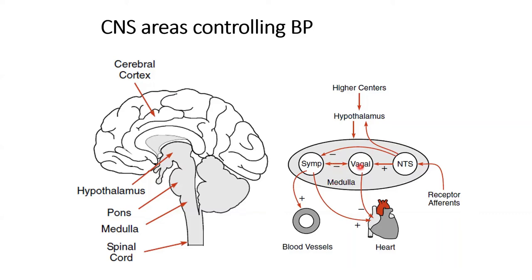Within the VMC there is a negative feedback loop: when sympathetic gets turned on it snubs the vagal center and vice versa. Regarding the effect of the autonomic nervous system on the heart: parasympathetic stimulation slows the heart rate but does not have a major effect on contractility. Sympathetic stimulation increases both heart rate and contractility. In blood vessels, parasympathetic does not play a huge role, but sympathetic does — depending on whether receptors are alpha-1 or beta-1.